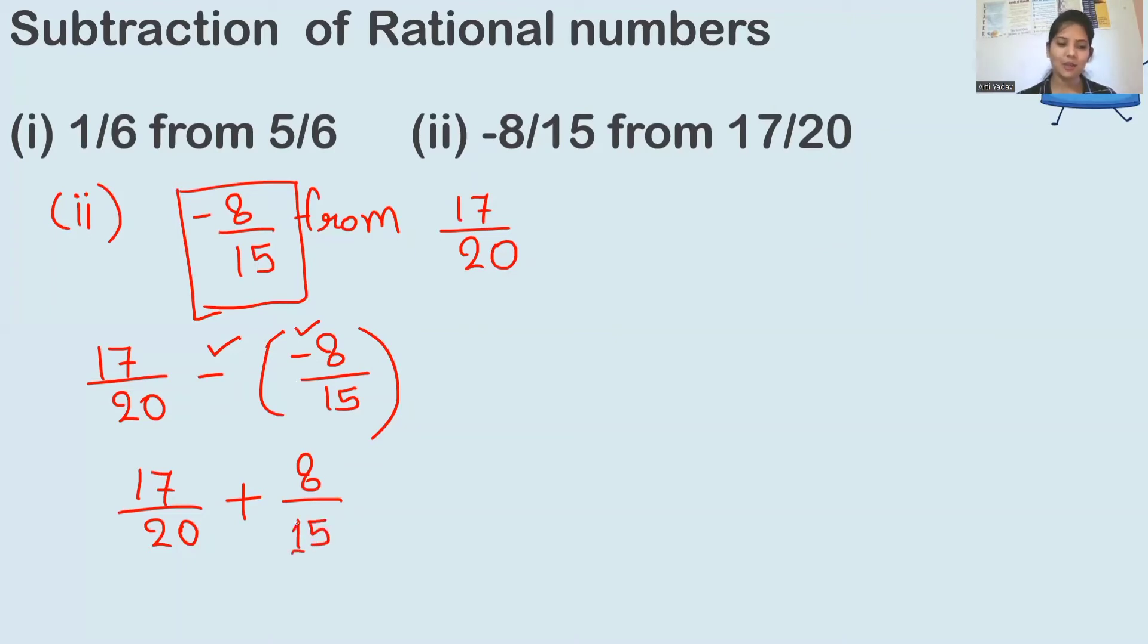Now we will similarly solve it like we have already done. We will take LCM of denominators because the denominators are not the same. So we will have to take their LCM. Let's find the LCM of 20 and 15. 15 and 20, both numbers here.